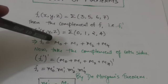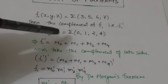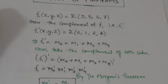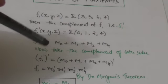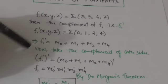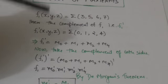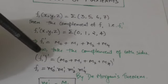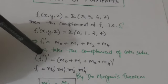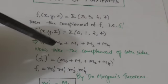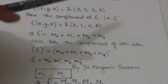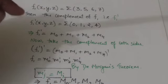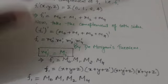So function F1 complement would be the sum of min terms: m0 plus m1 plus m2 plus m4. Now take the complement of both sides. When we take the complement of F1 complement it becomes F1, and when we take the complement of this sum of min terms by De Morgan's theorem it would become...